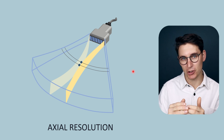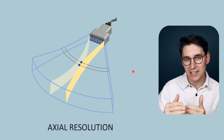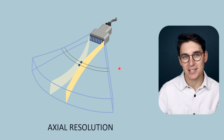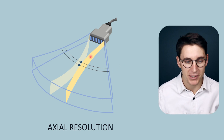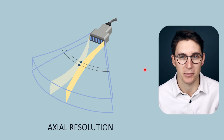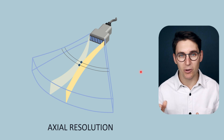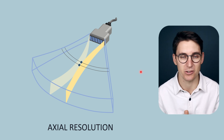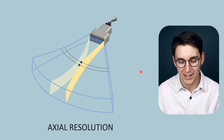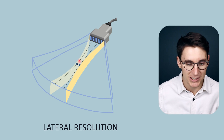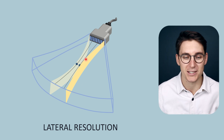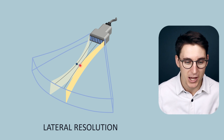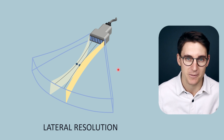We've looked at axial resolution, which is the ability to differentiate two discrete objects in the same longitudinal plane but at different depths within our ultrasound beam. Now we're going to look at lateral resolution and then touch briefly on elevational resolution. Lateral resolution is the ability to differentiate two discrete objects that are at the same depth within our ultrasound image but on different lateral planes.